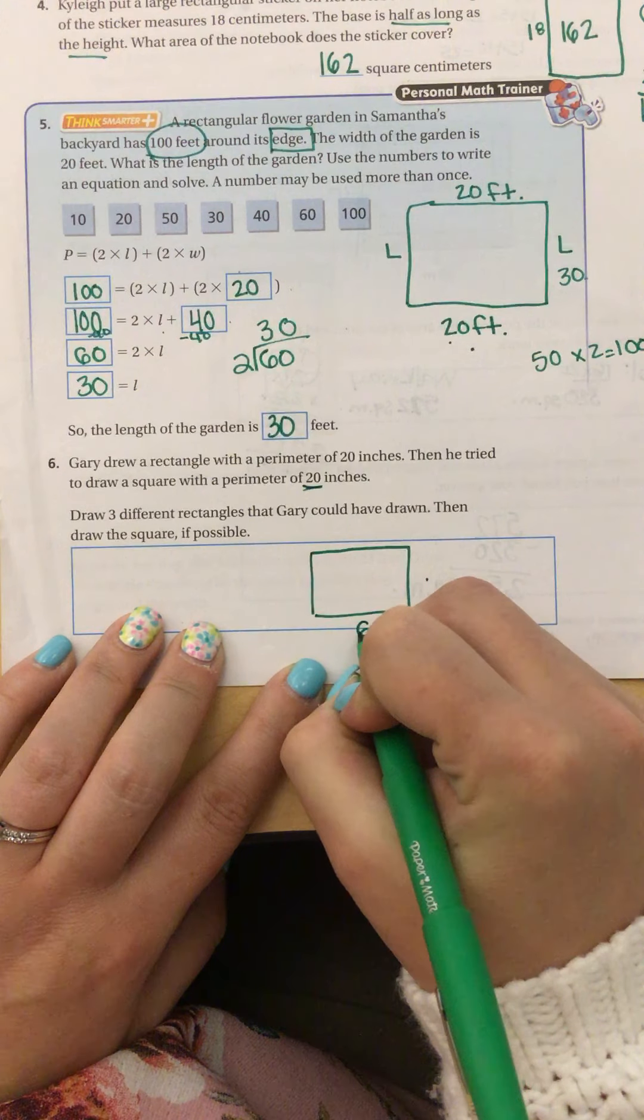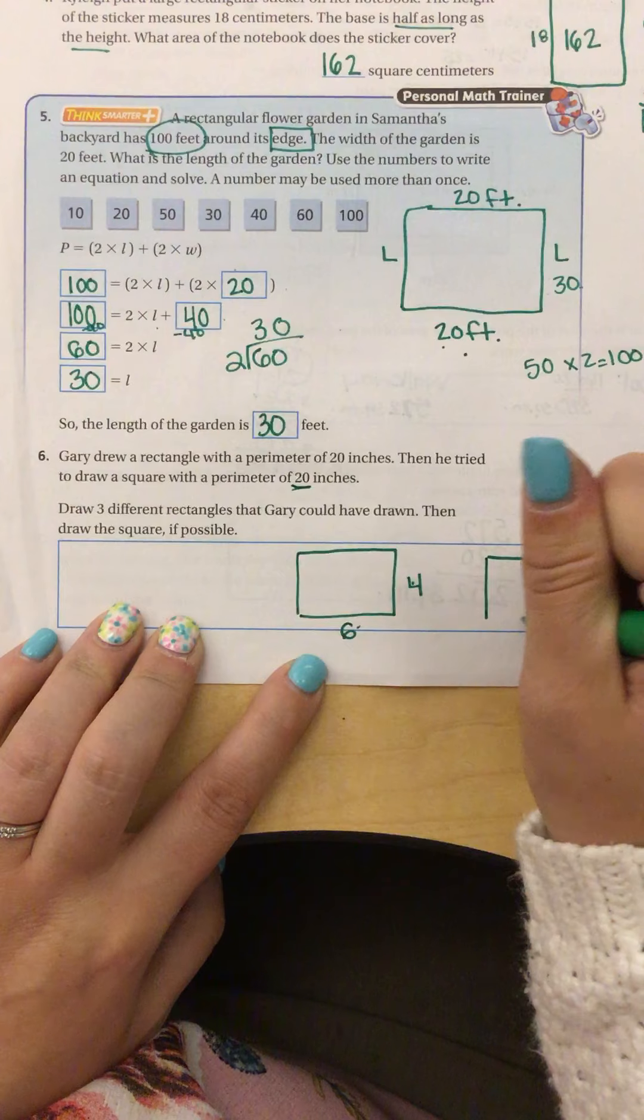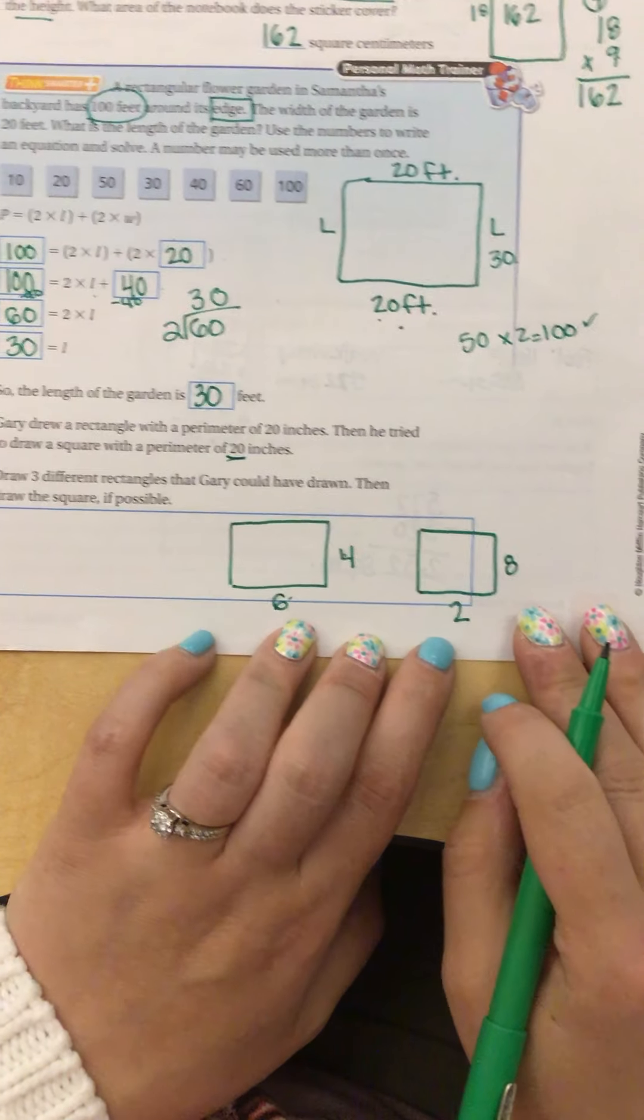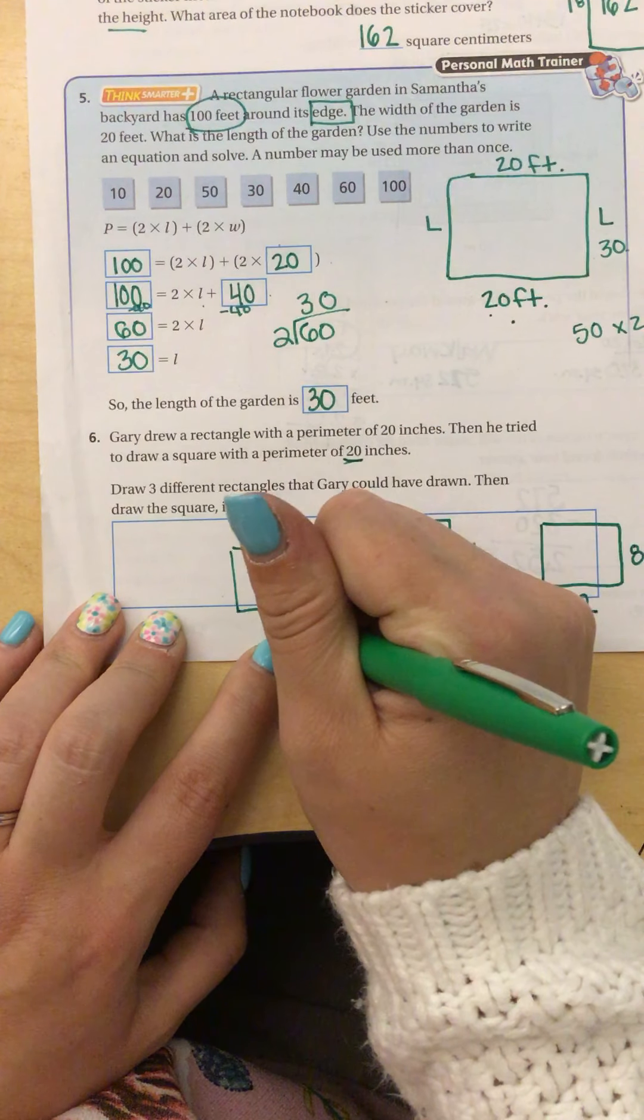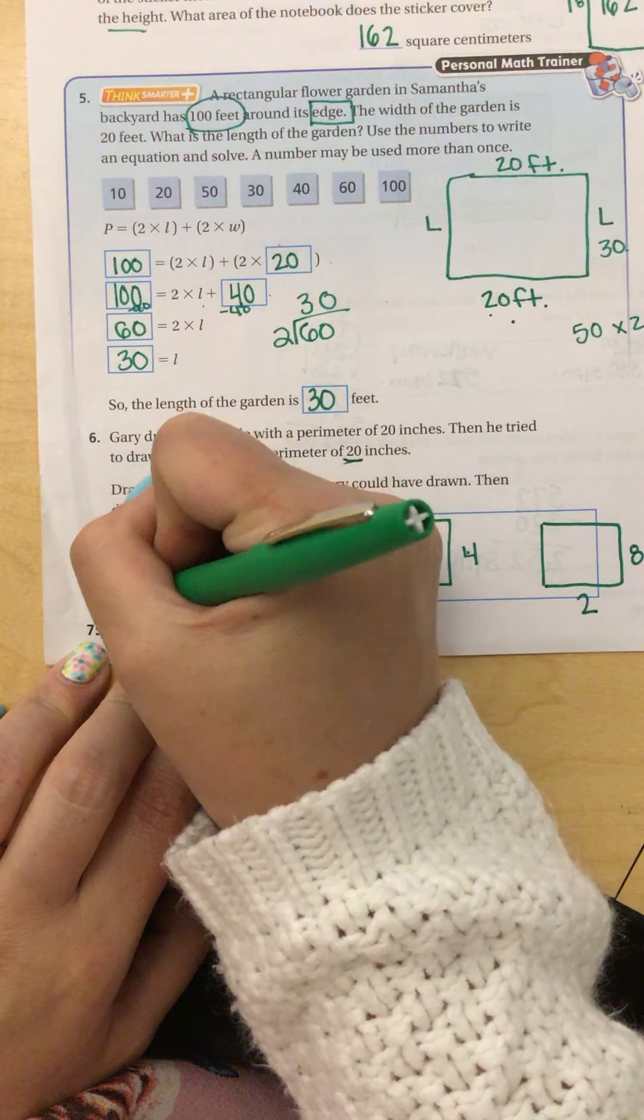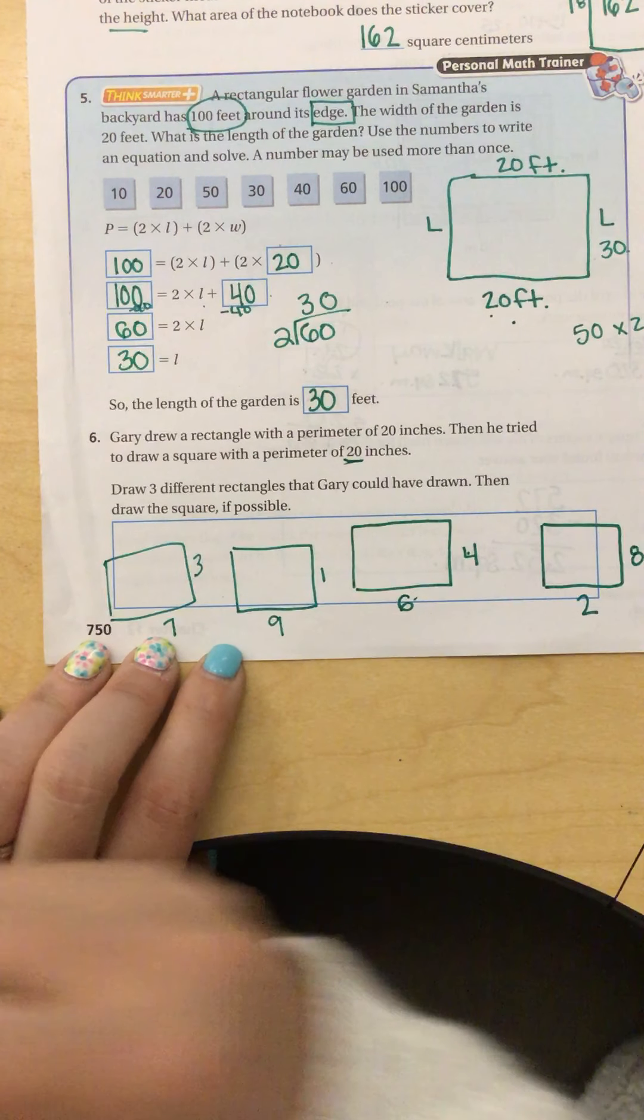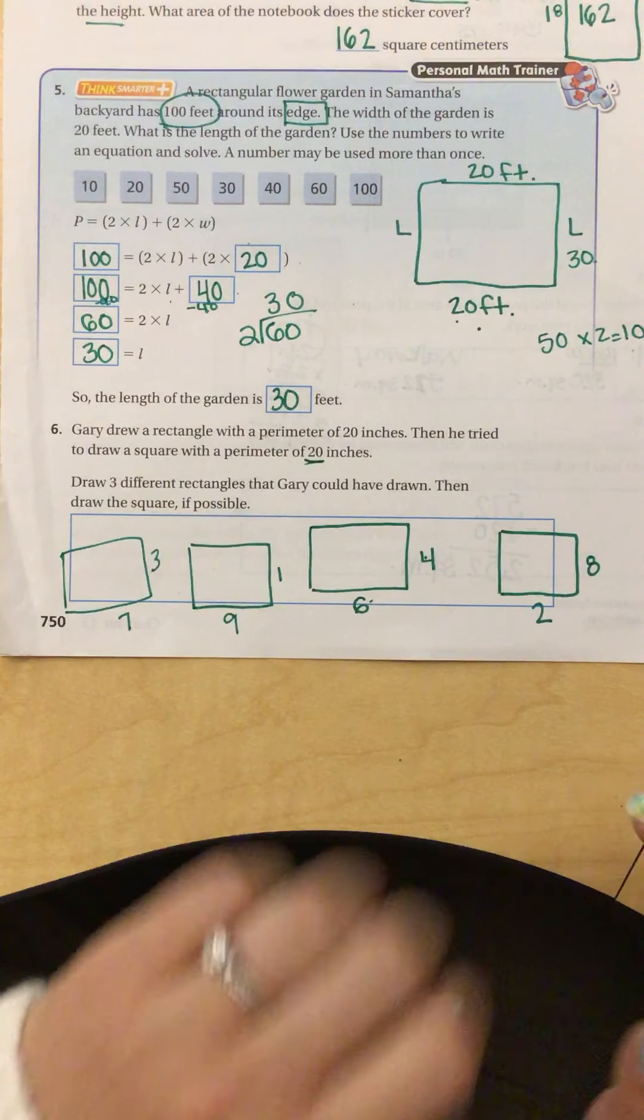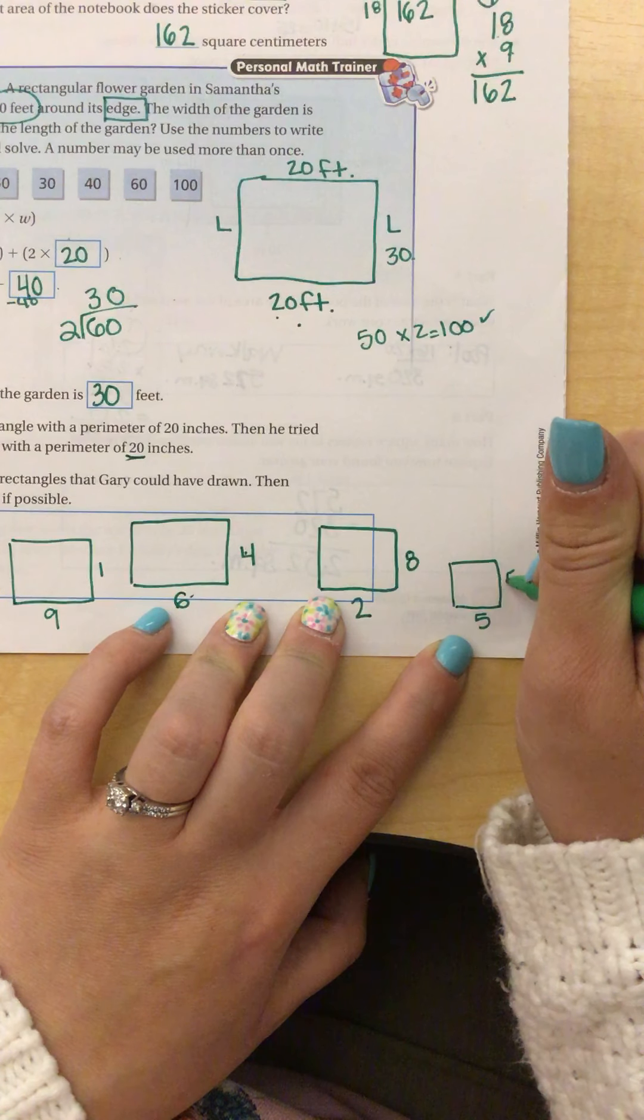So I could do 6 and 4. I could do 2 and 8. I could do, these are all combinations that make 10, 9 and 1. Then I could do 3 plus 7 makes 10. So I have 1 plus 9, 2 plus 8, 3 plus 7, 4 plus 6.